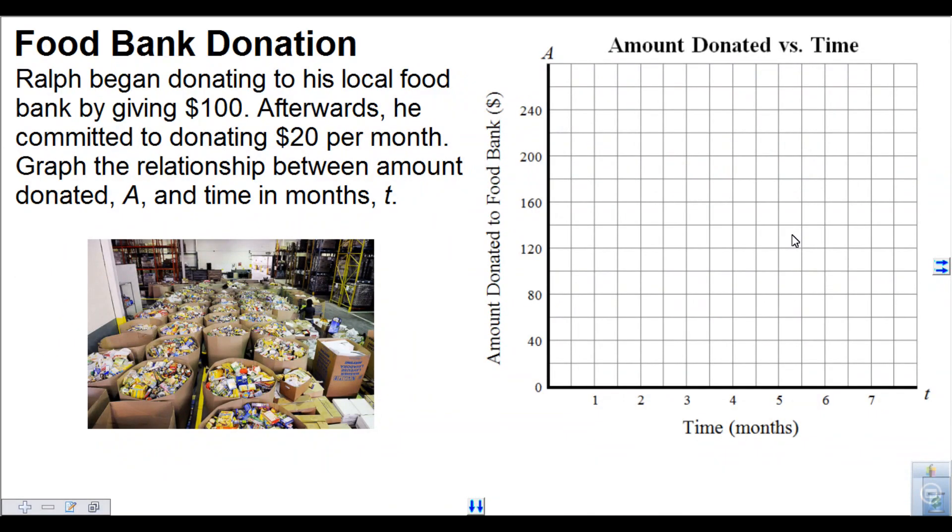So we're going to look at an example about food bank donations. Ralph began donating to his local food bank by giving $100. Afterwards he committed to donating $20 per month. So we're going to graph the relationship between amount donated, A, and time in months, T. In the beginning he gave $100, so that means at time zero he donated $100. Therefore we can draw a dot right there at $100.